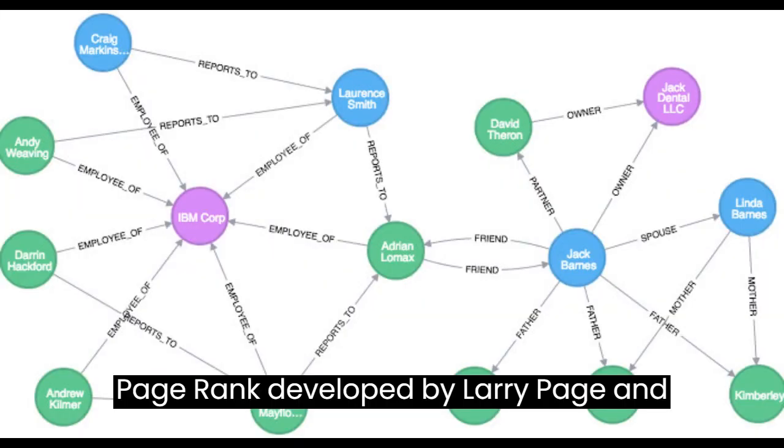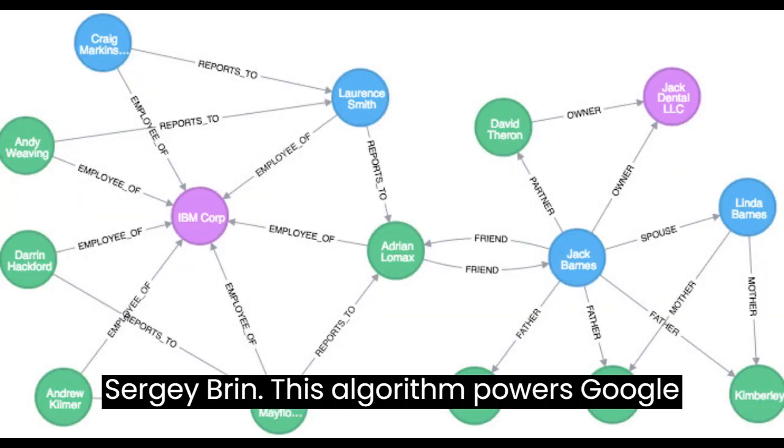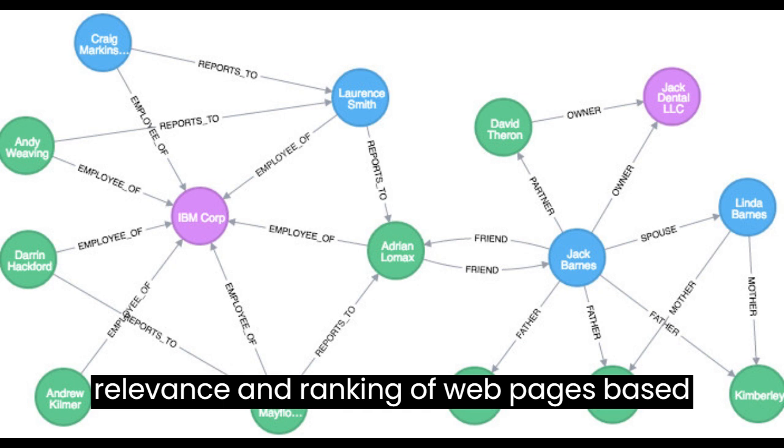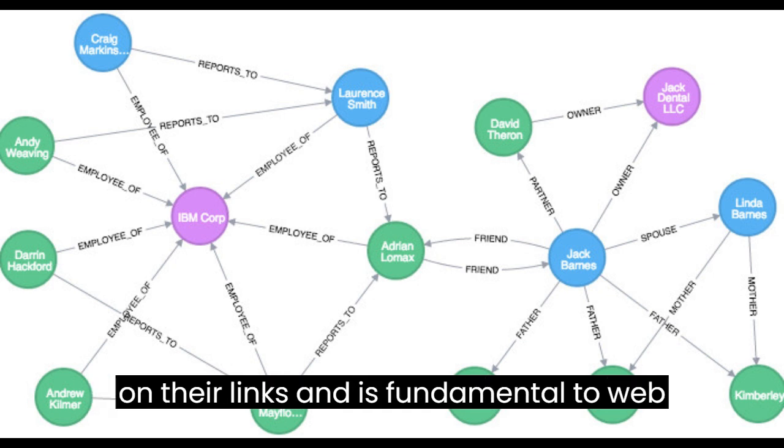PageRank, developed by Larry Page and Sergey Brin, this algorithm powers Google's search engine. It determines the relevance and ranking of web pages based on their links and is fundamental to web search.